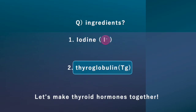Iodine and thyroglobulin. When thyroglobulin binds with iodine, thyroid hormones are produced. Let's go through the steps together.